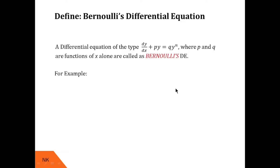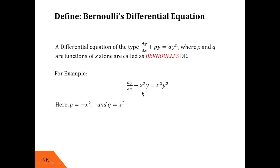Let's see an example: dy/dx − x²y = x²y². This is a Bernoulli's differential equation with P = −x² and Q = x².